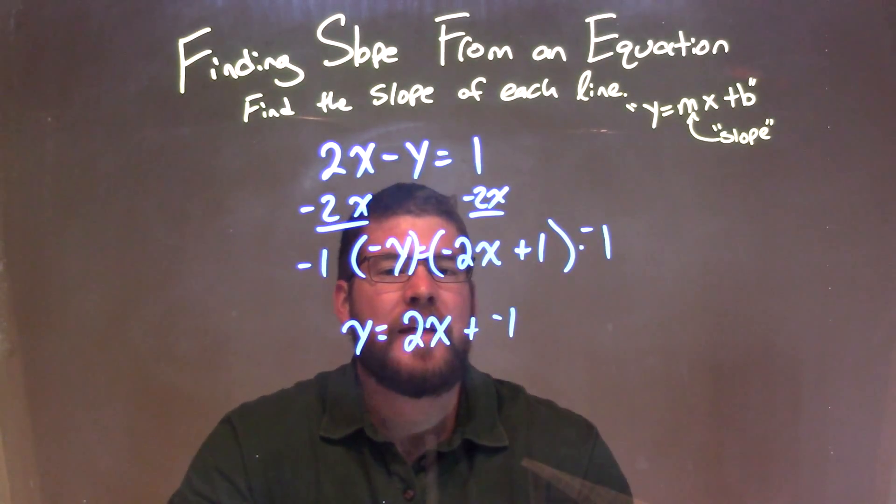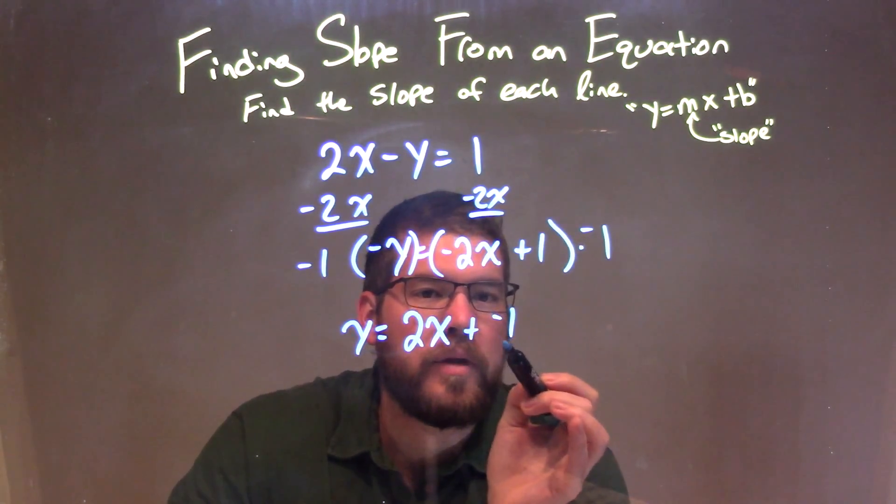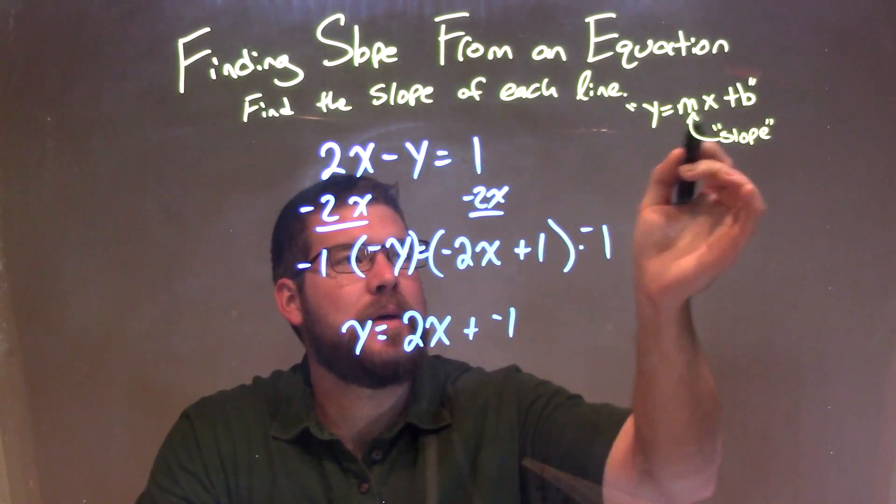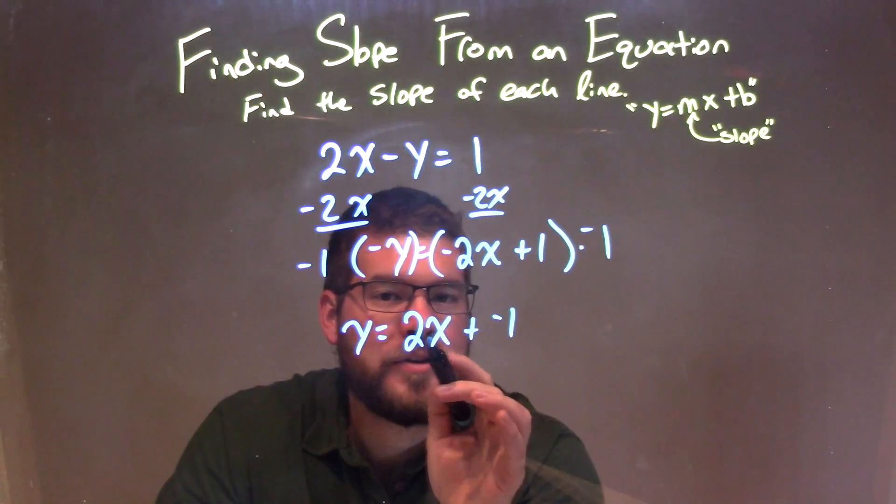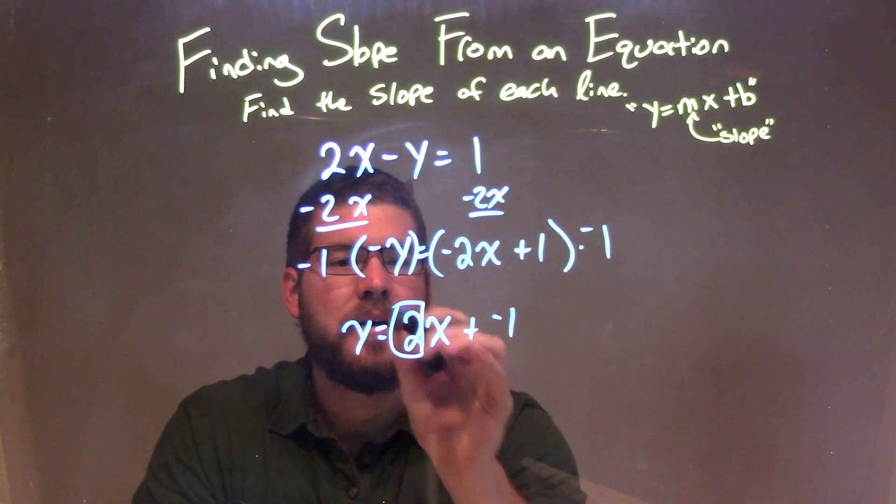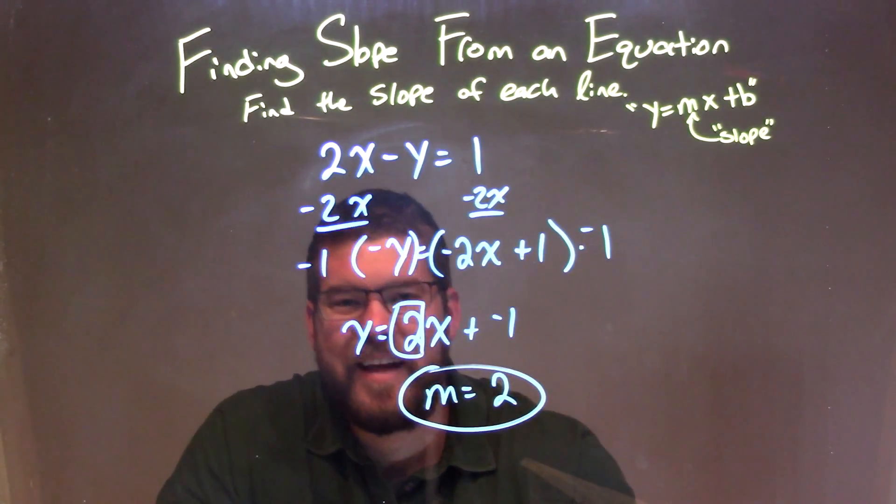Now we have it in slope intercept form, y equals mx plus b. y is isolated, so we need to identify our m value, which is the coefficient in front of x. That's 2. Our final answer is m equals 2, and that's our slope.